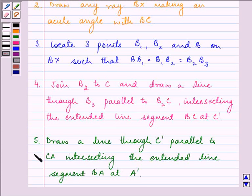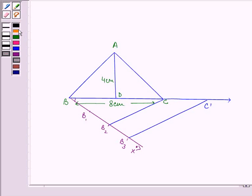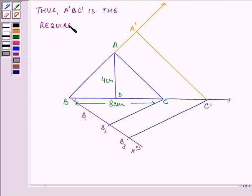Now the fifth step is to draw a line through C dash parallel to CA intersecting the extended line segment BA at A dash. So let us first extend the line BA, and now we need to draw a line which is parallel to AC through C dash intersecting the extended BA at A dash, right? So A dash B C dash is the required triangle.